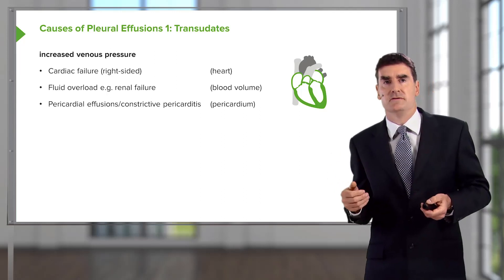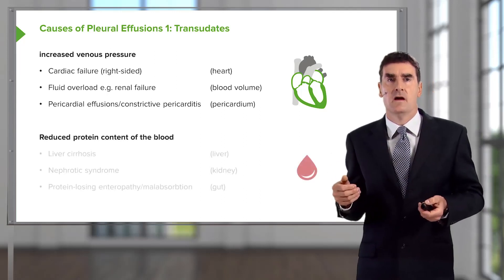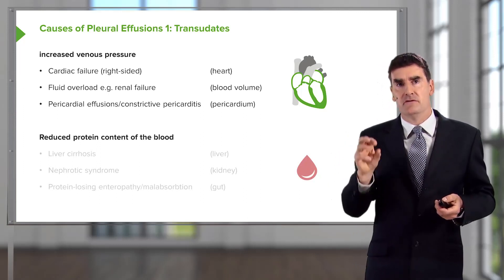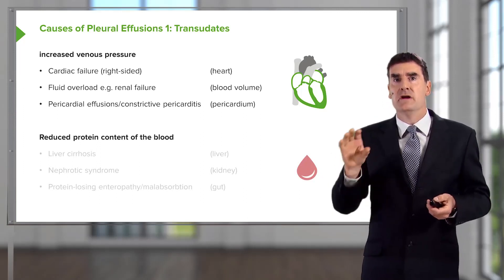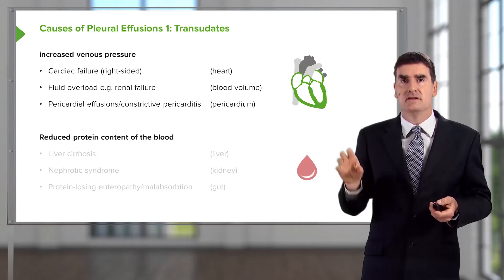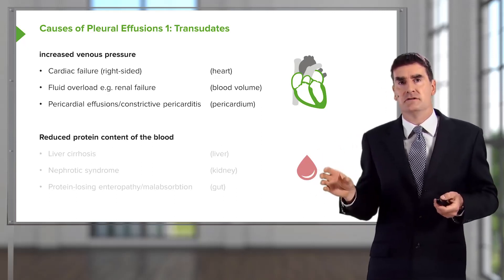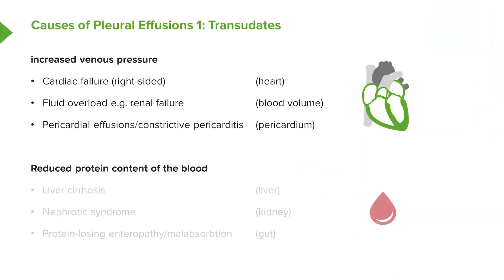The protein content of the blood is required for retaining fluid within the blood, and with a low albumin content you end up with fluid seeping out into the pleural space, into ascites, and into peripheral edema as well. Patients with very low protein content of the blood will present with pleural effusions. These include liver cirrhosis, nephrotic syndrome, and very rarely protein-losing enteropathy or malabsorption, though the common causes would be renal and liver problems.